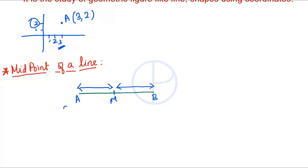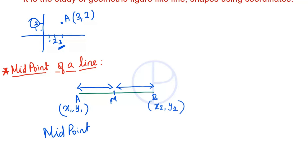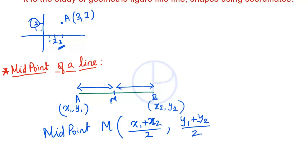Suppose A is (x1, y1) and B is (x2, y2). The midpoint M is given by: M = ( (x1 + x2) / 2 , (y1 + y2) / 2 ).